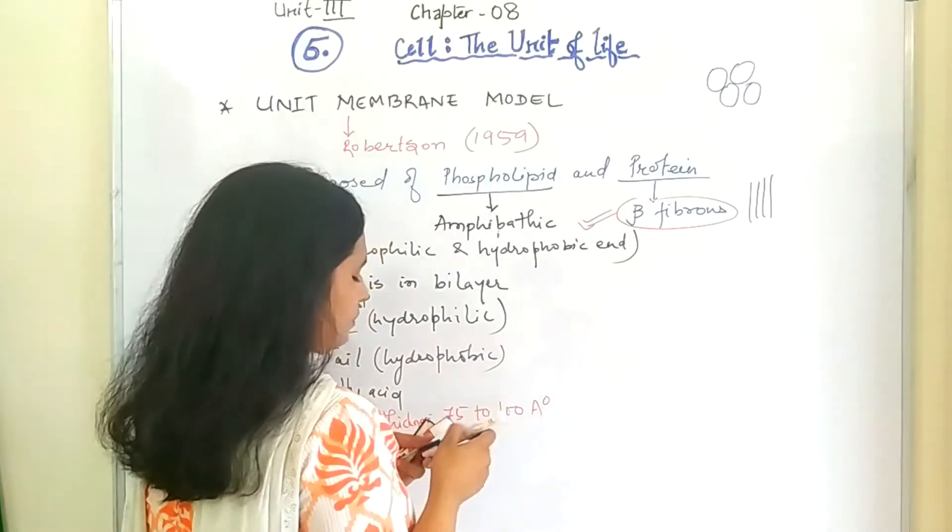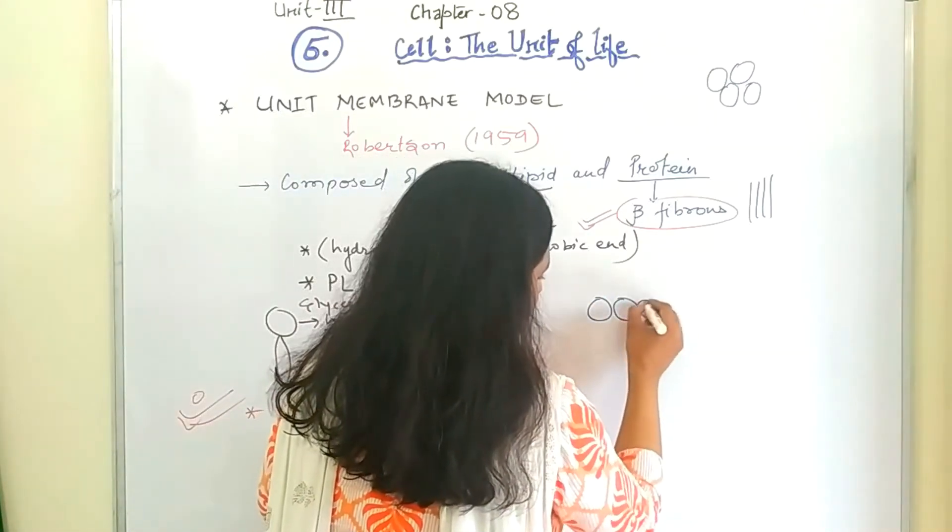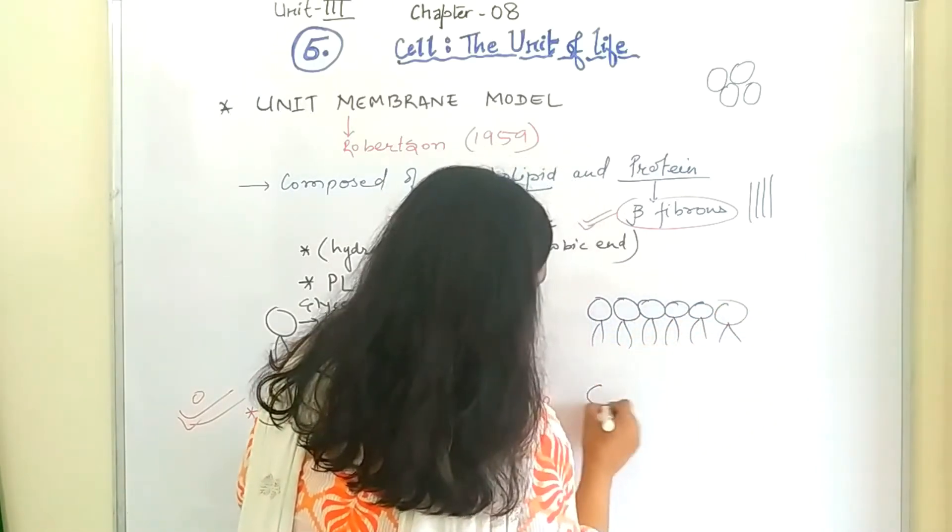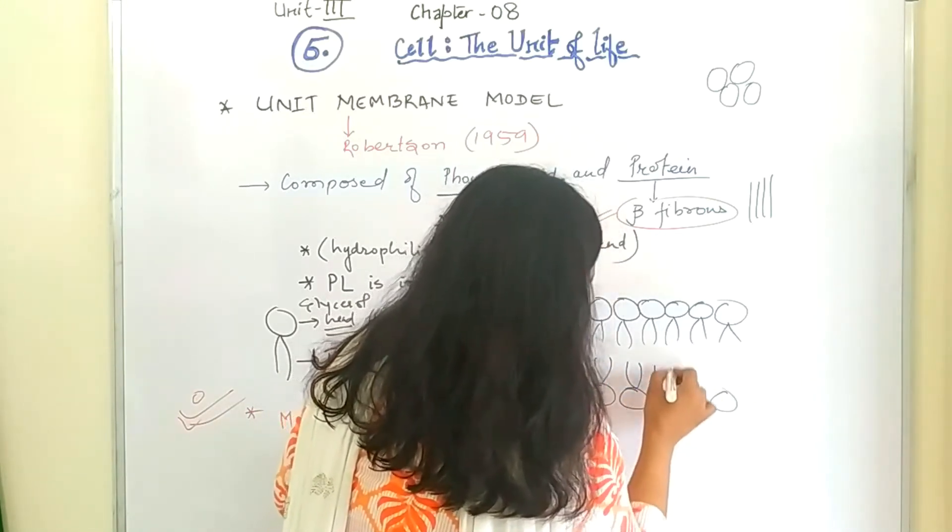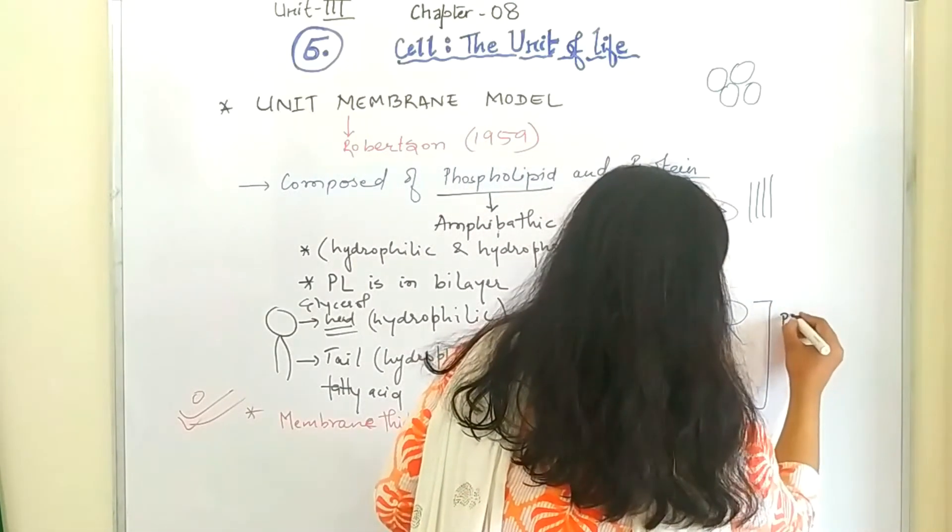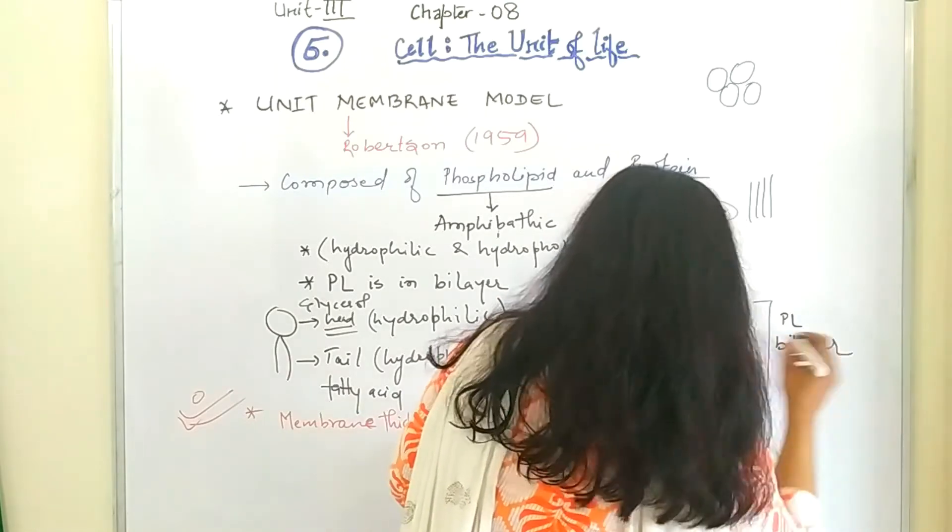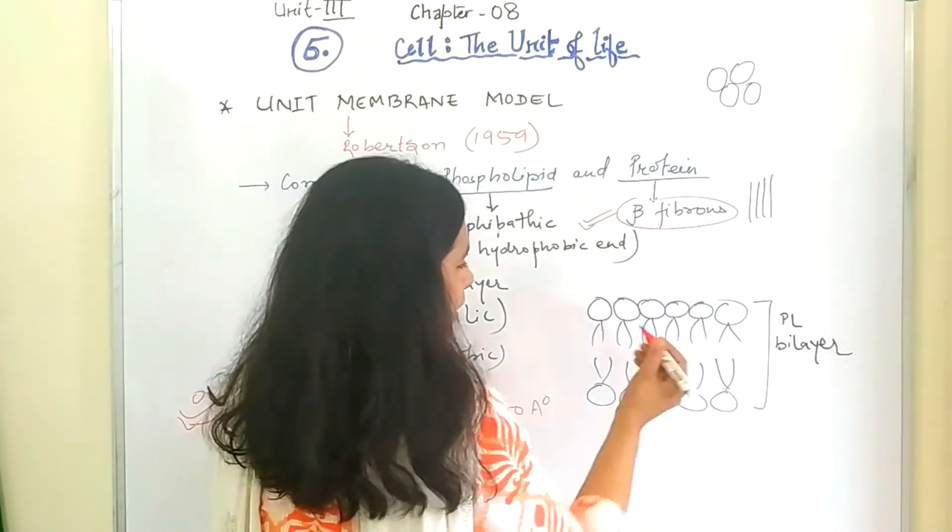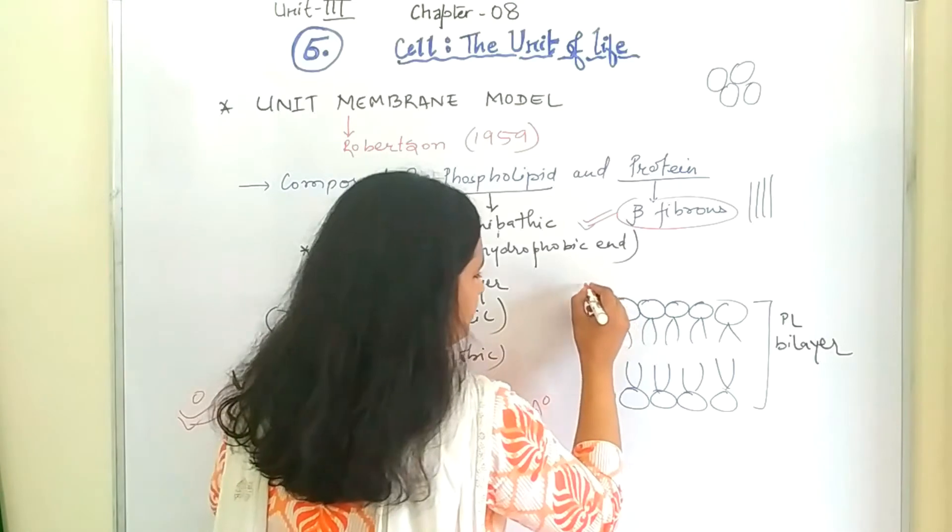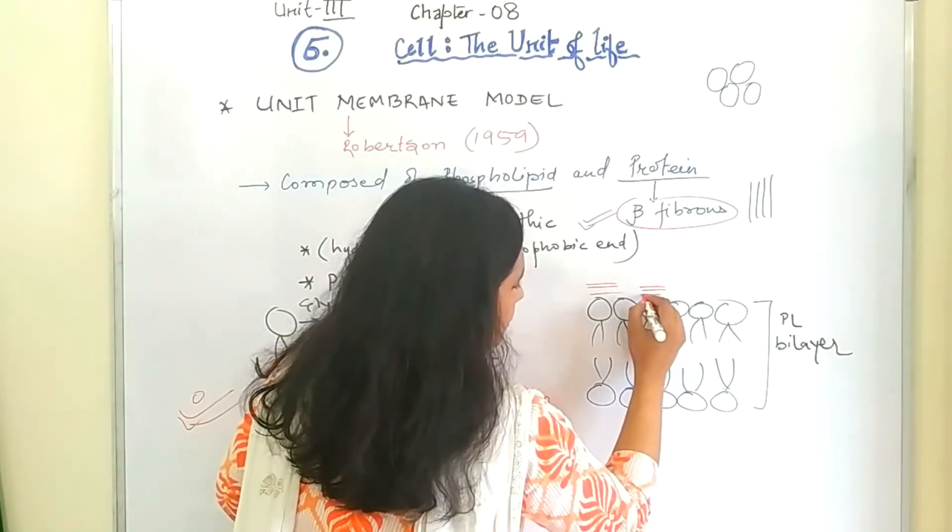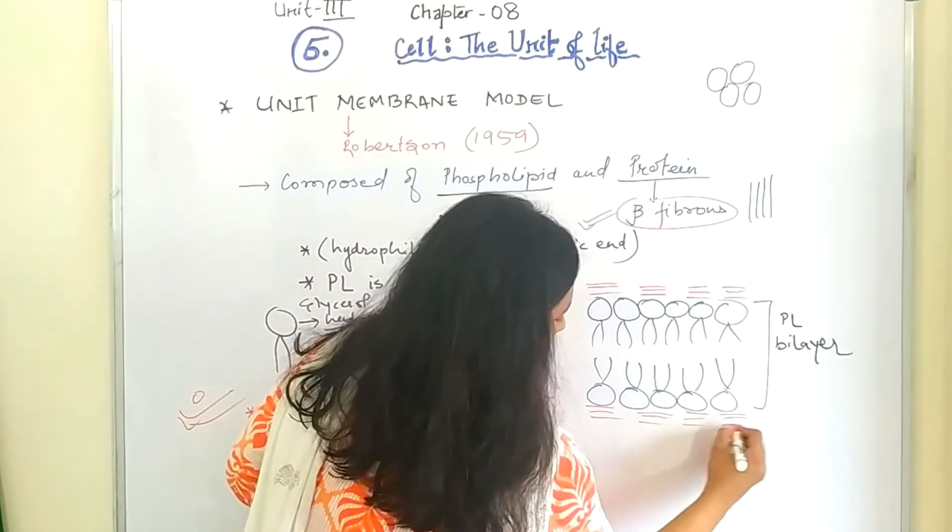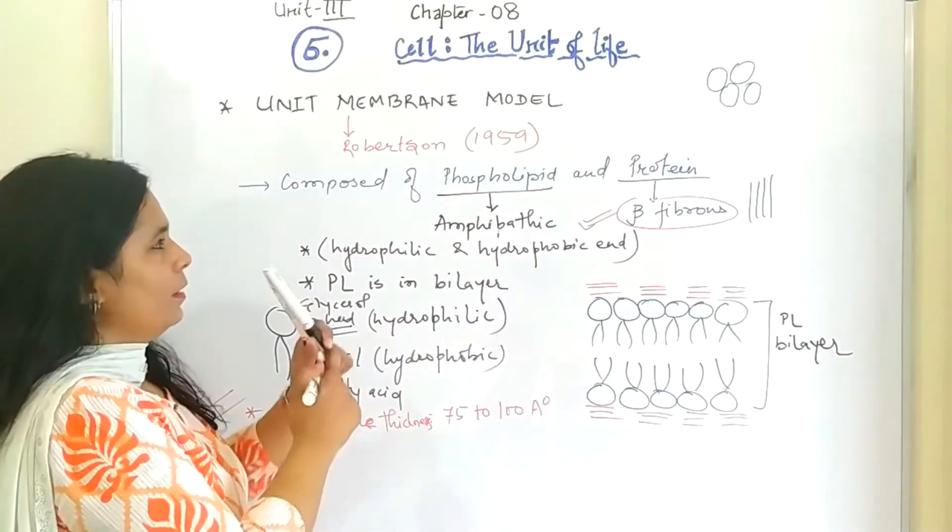Now let's see the structure. This is the first layer of phospholipid. This is another layer. So I will call it as phospholipid bilayer. Then the proteins are fibrous and they were arranged on both the sides of this lipid bilayer, like this. This was the model given by Robertson.